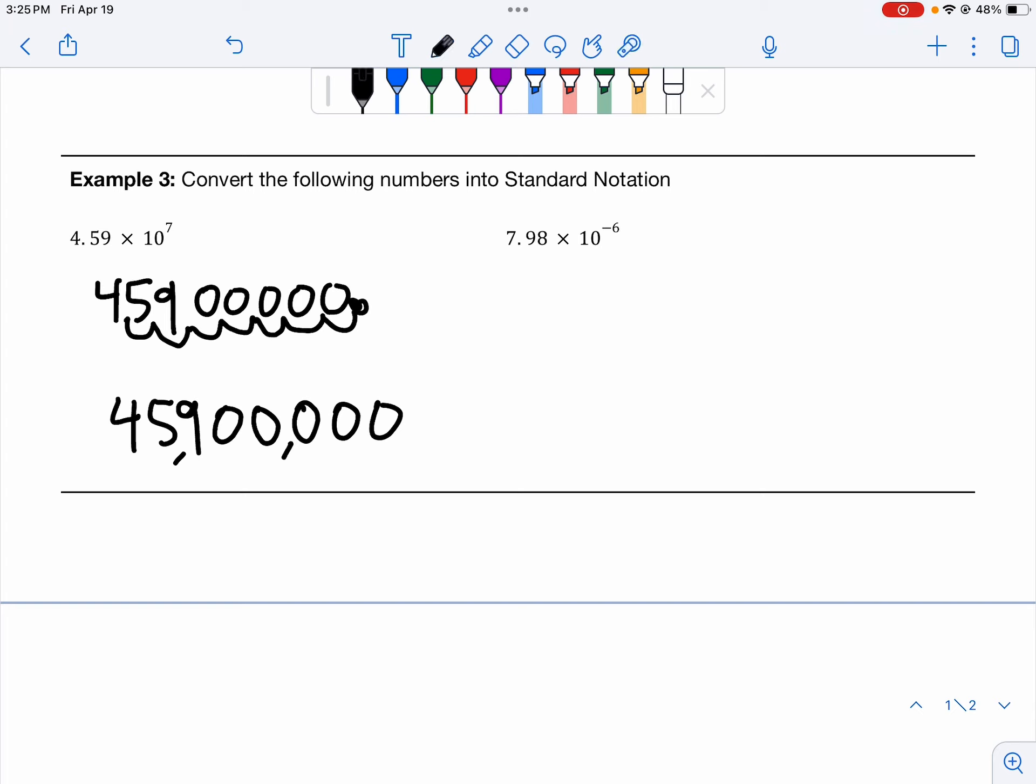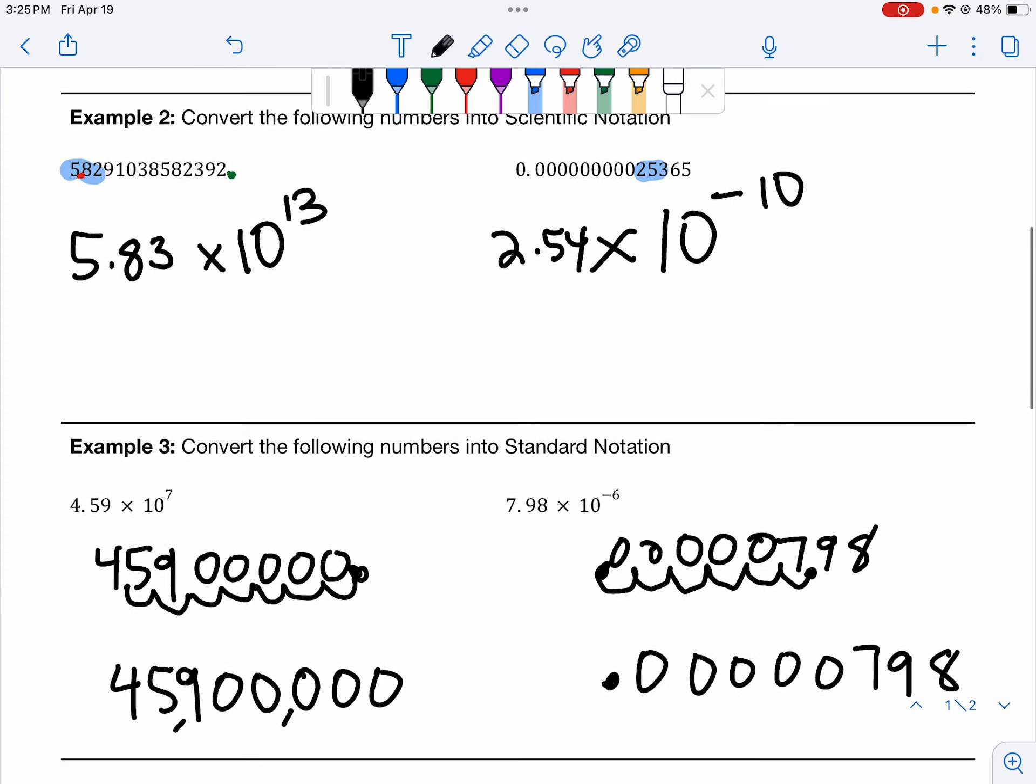All right. Last number. Let's go ahead and write down 7, 9, 8. I write it to the right because I know that because of this negative 6, I'm going to be moving my decimal place to the left. We are going to move it to the left six times. So it starts here between the 7 and the 9. 1, 2, 3, 4, 5, 6. New decimal place. Add your zeros as placeholders. I'm going to rewrite it so it looks cleaner. 0, 0, 0, 0, 0, 0, 7, 9, 8. And that is our answer and the end of our video.